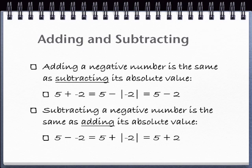Using this idea, we can see that 5 plus negative 2 is the same as 5 minus the absolute value of negative 2, or 5 minus 2. Likewise, 5 minus negative 2 is the same as 5 plus the absolute value of negative 2, or 5 plus 2.